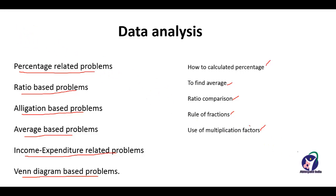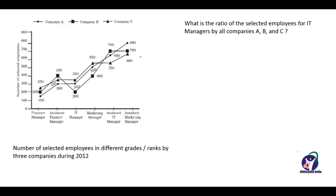Now, here is the first question on the screen — that is the graph. The number of selected employees in different grades or ranks by three companies during 2012 is shown, and you have to answer the given questions.